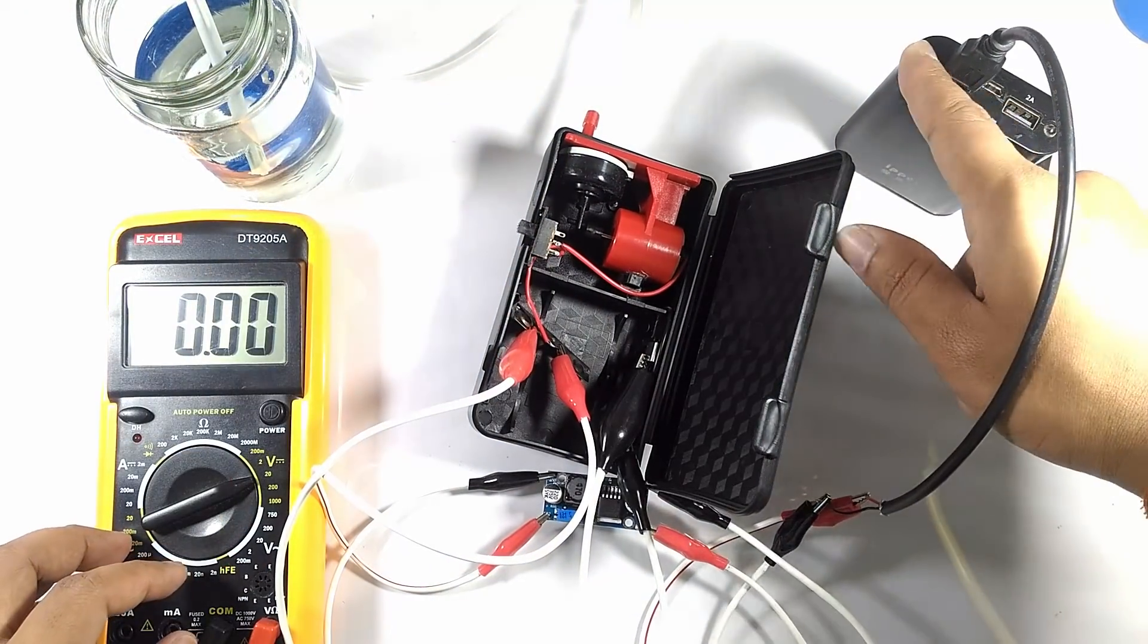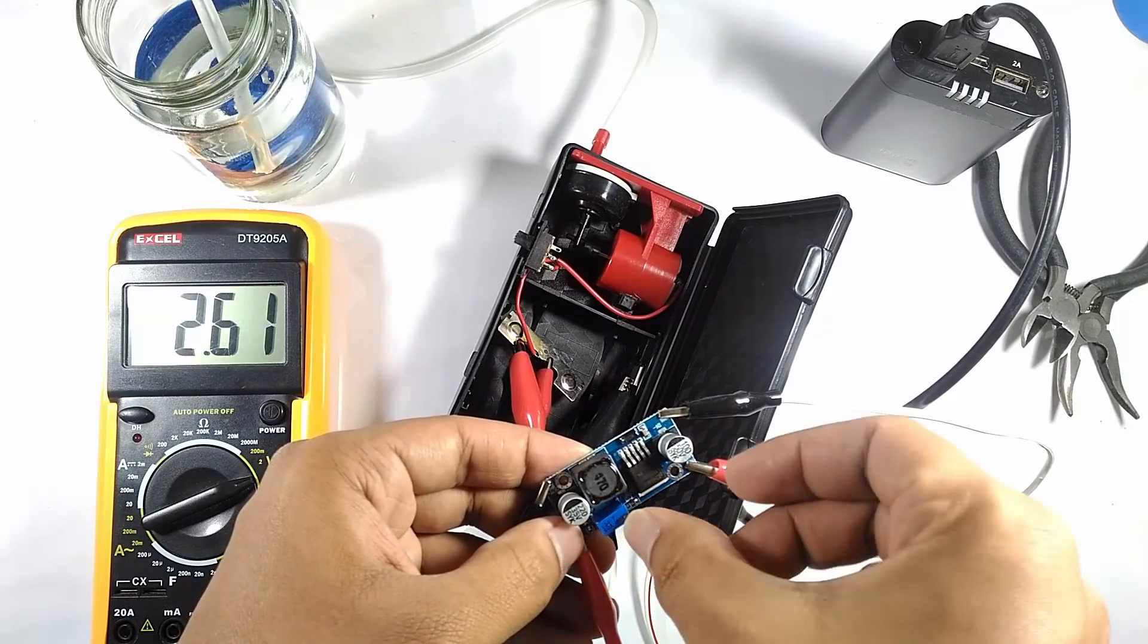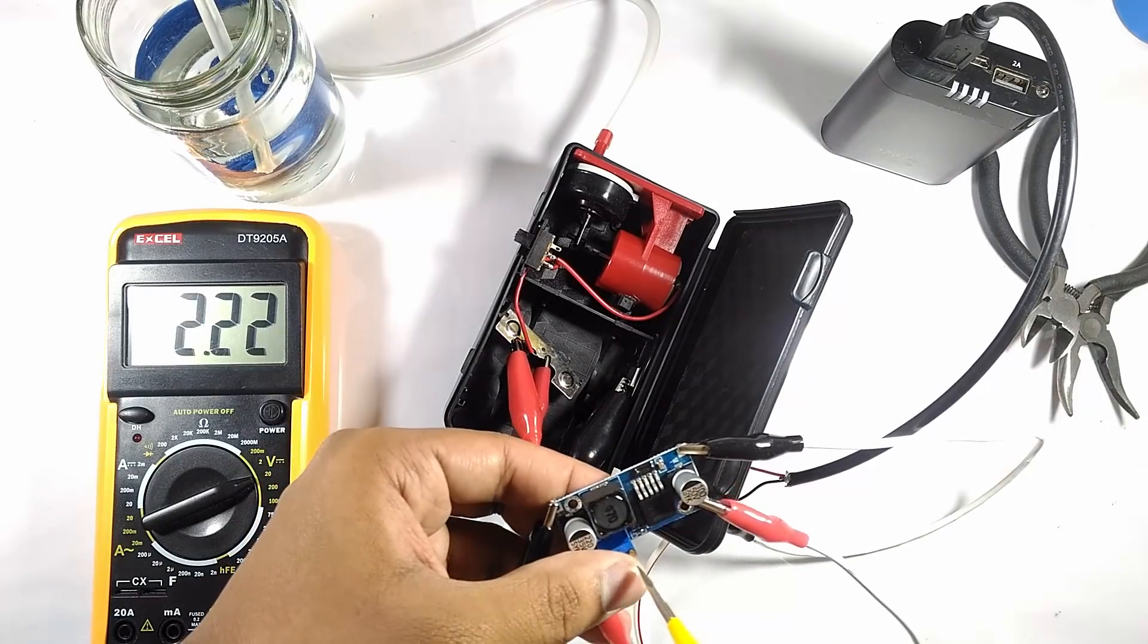The potentiometer in the buck converter should be turned counterclockwise in order to reduce the voltage and vice versa. You can use your fingernail or a small screwdriver to adjust the potentiometer.